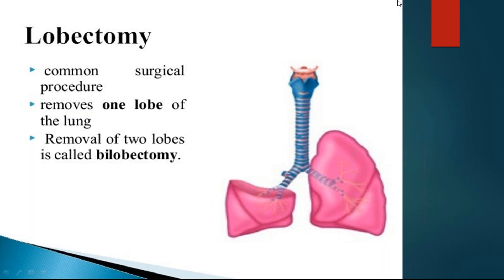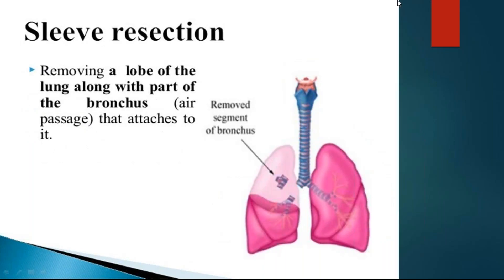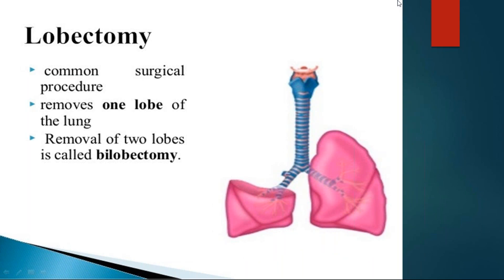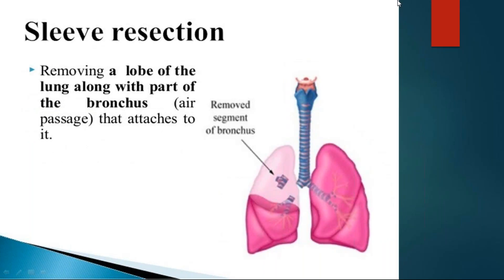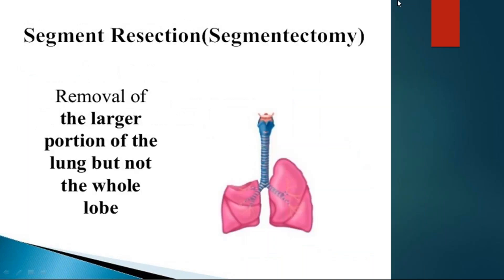Lobectomy is the most commonly performed surgery, removing only one lobe of the lung. Bilobectomy means removal of two lobes. In sleeve resection, along with the lobe, a part of the bronchus attached to it is also removed — as seen in the picture, the upper lobe is removed along with a portion of the bronchus. In lobectomy, only the lobe is removed without removing the bronchus. In segmentectomy, most of a lung segment is removed but not the entire lobe.